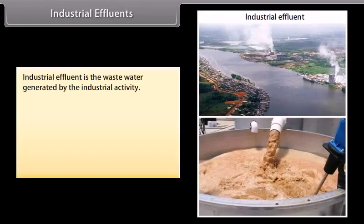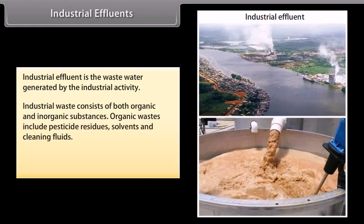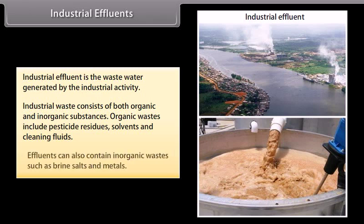Industrial effluent is the wastewater generated by industrial activity. Industrial waste consists of both organic and inorganic substances. Organic wastes include pesticide residues, solvents, and cleaning fluids. Effluents can also contain inorganic waste such as brine salts and metals.